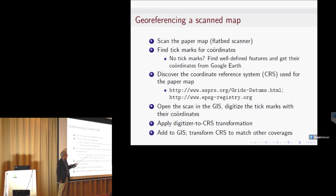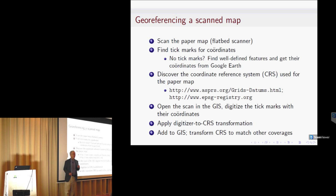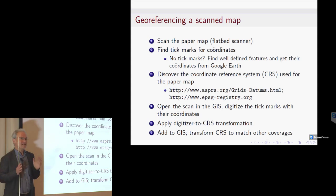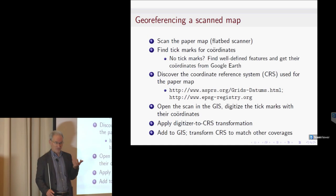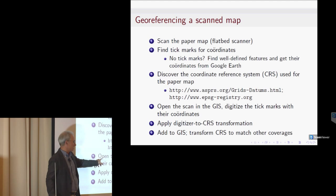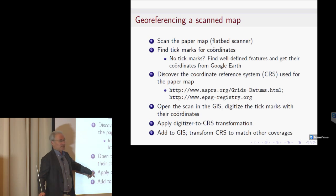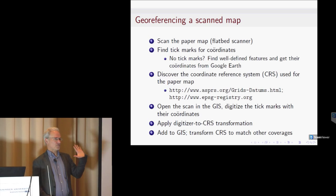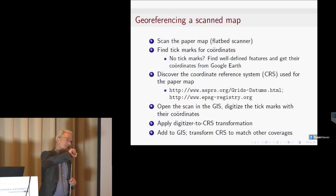There's an excellent series called 'Grids and Datums' in the Photogrammetric Engineering and Remote Sensing Journal by Cliff Munier, covering the mapping and geodetic systems used in most countries, including those with colonial history. Once you know the coordinate system, there's a registry of all coordinate systems in the world. You open the scan in GIS, digitize the tick marks, register it, transform it to your GIS, and finally you can convert it to any coordinate system.